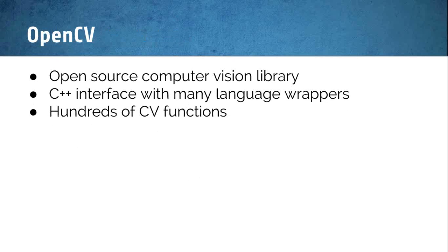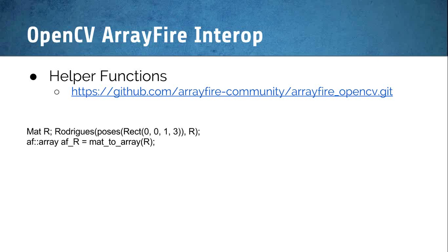OpenCV is an open source computer vision library — that's the CV in OpenCV. It has hundreds of computer vision functions for whatever type of computer vision application you may need. It has a C++ interface but also many different language wrappers, so depending on your platform you can find a wrapper for your development. ArrayFire supports OpenCV and is interoperable — you can look at our GitHub repository for examples of how to use ArrayFire with OpenCV.